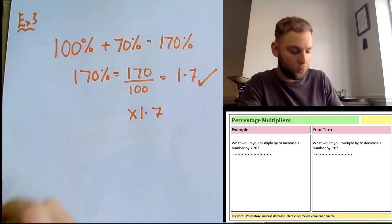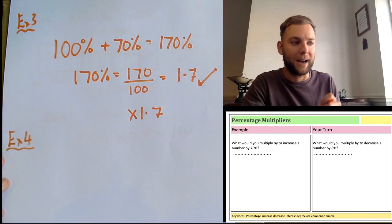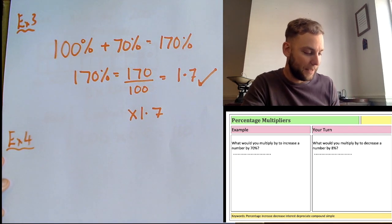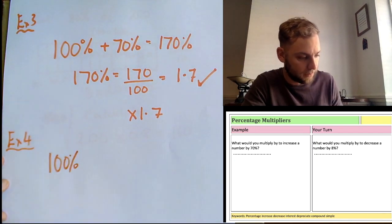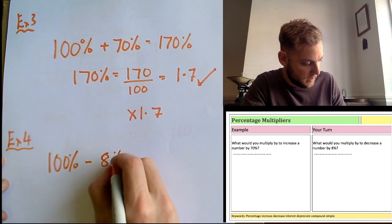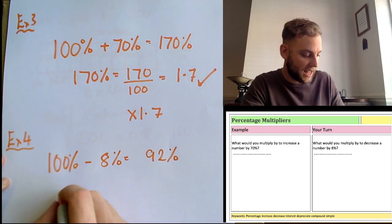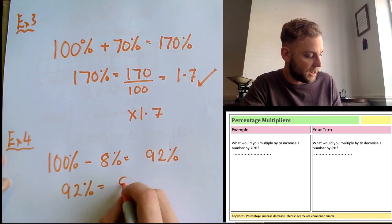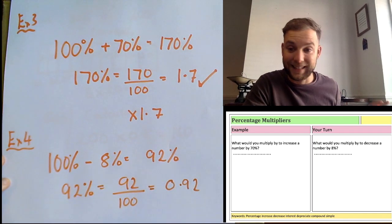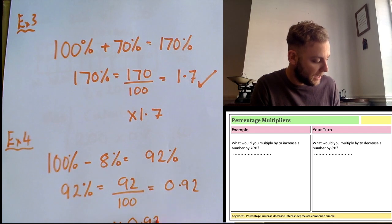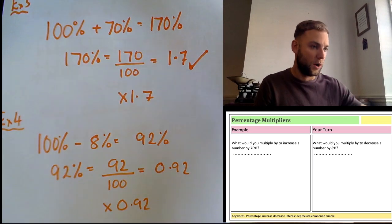Example 4: what number would you multiply by to decrease a number by 8%? Starting with 100% and subtracting 8% gives 92%. Writing that as a decimal: 92 ÷ 100 = 0.92. So 0.92 is the multiplier for an 8% reduction.